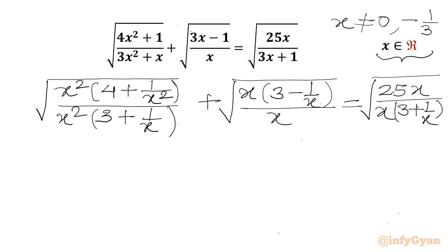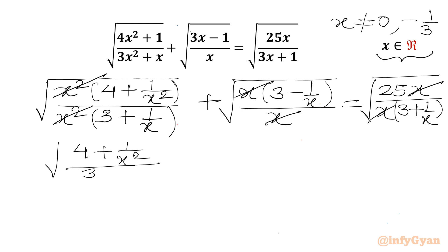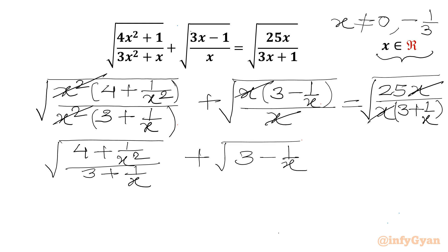Now I can cancel x² with x², and x with x. So our equation becomes: square root of (4 plus 1 over x²) over (3 plus 1 over x), plus square root of (3 minus 1 over x), equal to square root of 25 which is 5, over square root of (3 plus 1 over x).